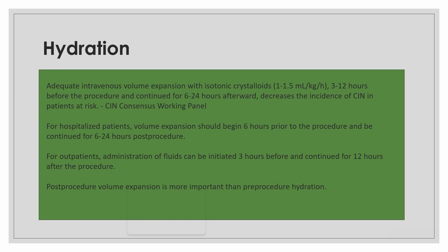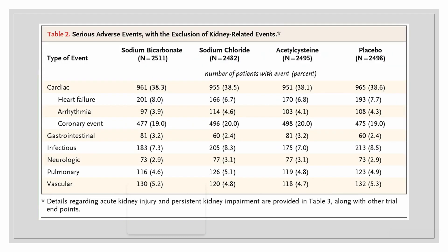Isotonic crystalloids should be given at 1 to 1.5 ml per kg per hour. The PRESERVE trial, published in the New England Journal of Medicine in 2017–18, showed that N-acetylcysteine is not superior to placebo, and sodium bicarbonate has no advantage over normal saline.